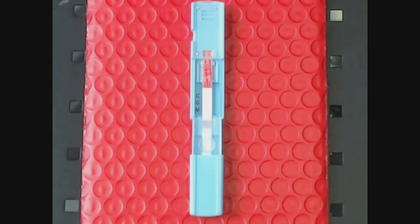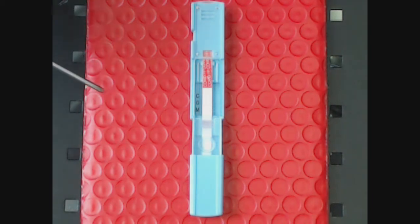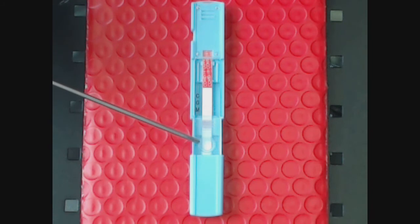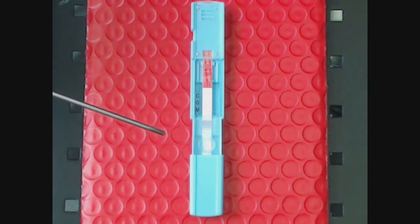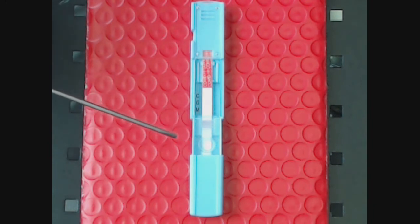First, you see an opening right here. This is going to be where your one drop of blood will be placed. After that, you're going to place two drops of buffer. Good rule of thumb is to do one drop of buffer, count to one thousand, and do a second drop of buffer.